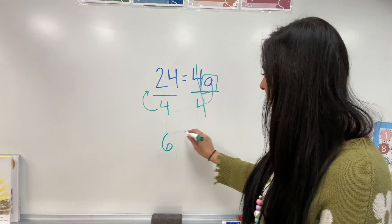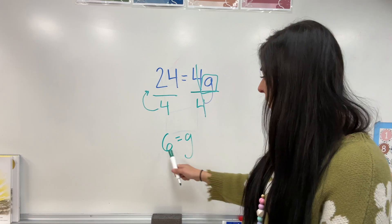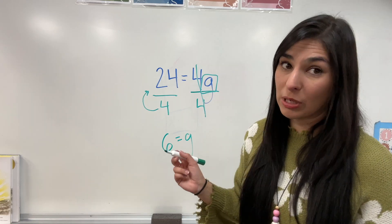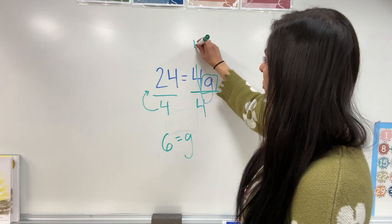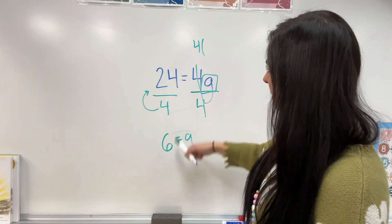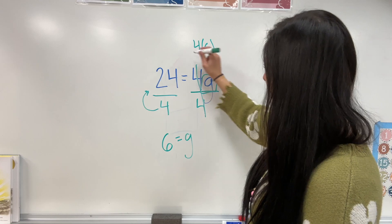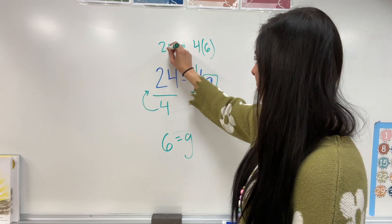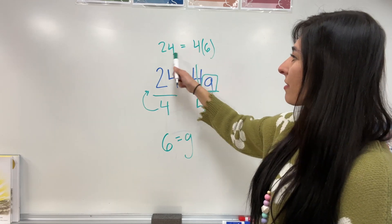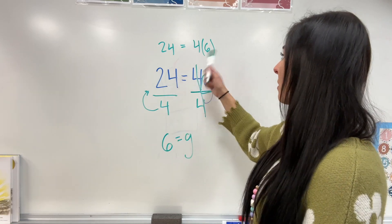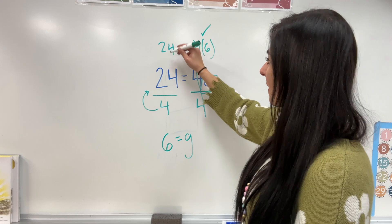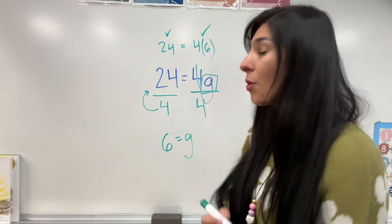And, I have g all by itself. So, 6 equals g. G equals 6. If you would like to double check, as you should, you should plug it in. So, we would have 4 times 6 equals 24. These two have to be the same in order for it to be true. So, 6 times 4, that is 24. And, that does equal the same as that side. So, we are good to go.